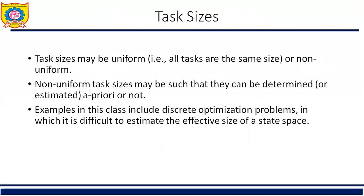The next characteristic is task size. Task size may be uniform — that is, all tasks are of the same size — or non-uniform. Non-uniform task sizes may or may not be determinable or estimable prior to execution. Examples include discrete optimization problems in which it is difficult to estimate the effective size of the state space.